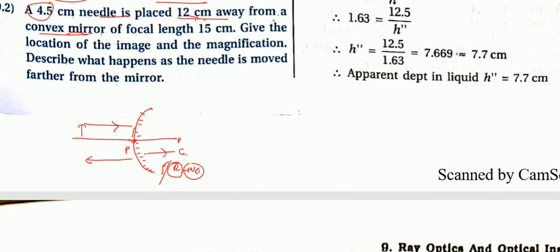Always remember by drawing the figure. Convex mirror: F and R are both positive. Object distance is always negative. So here f = positive 15, u = minus 12, and object height h1 = 4.5 cm. Object height is always positive since we keep the object upright.